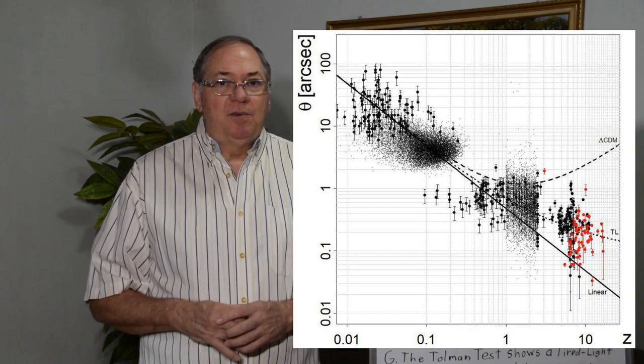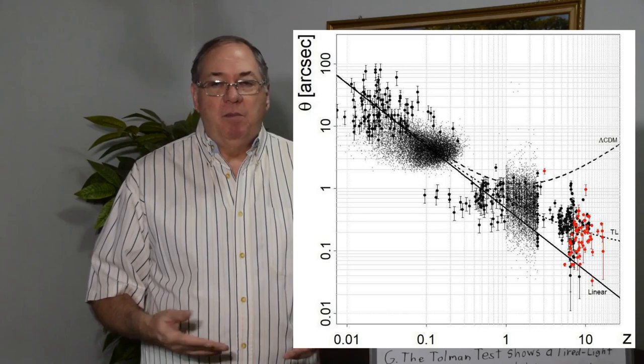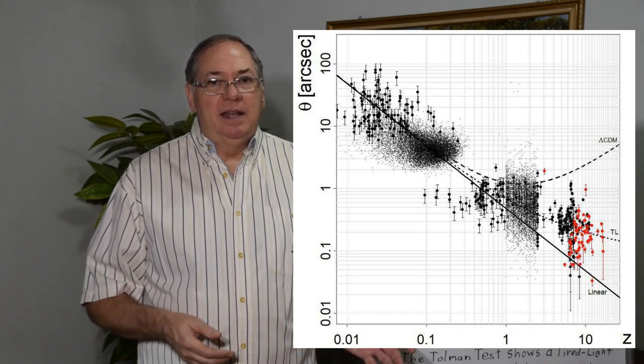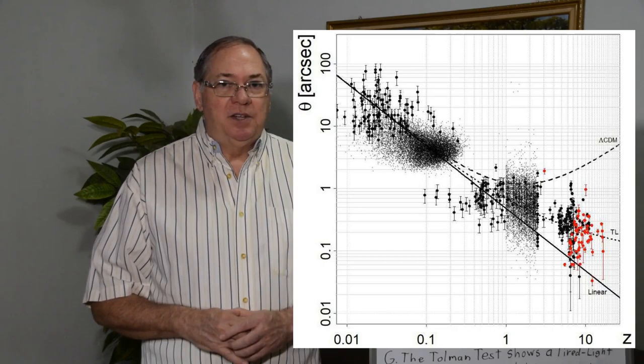So that's where we are. This is what the data shows. And obviously, as JWST continues to collect data and more data on high redshift galaxies, we'll probably see even more data that is convincingly along the tired light line as shown in this paper.